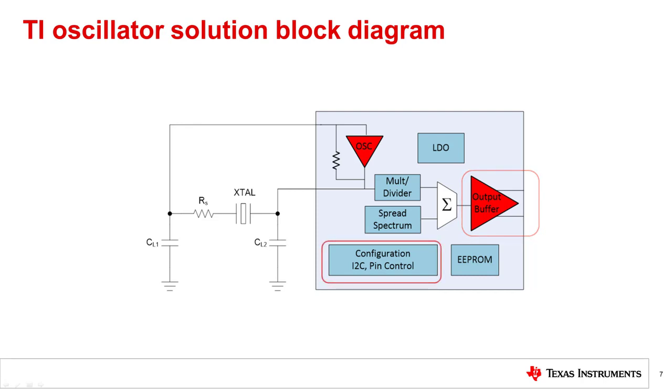I2C programmability allows for updates to the EEPROM to change the startup configuration. I2C can also be used for simple register control, for example, changing the output divider value. Changing the output divider results in a different output frequency. This is known as coarse tuning ability for oscillators.